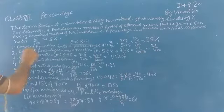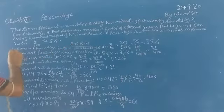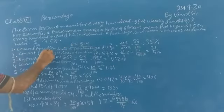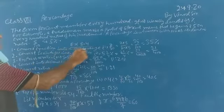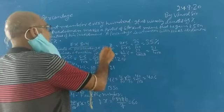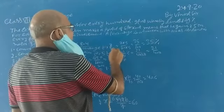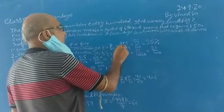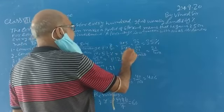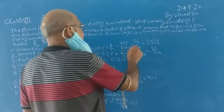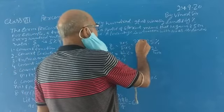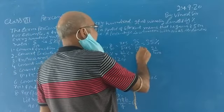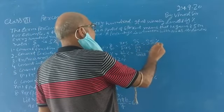First question, Exercise 8.4. Convert the fraction to percentage. 7 by 20 is equal to 7 times 5 by 20 times 5, so 35 by 100, which is equal to 35 percent.